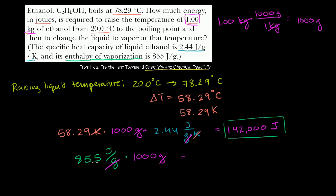The grams cancel out. 855 times 1,000 is 855,000 joules. So it actually took a lot less energy to make the ethanol go from 20 degrees Celsius to 78.29 degrees Celsius.